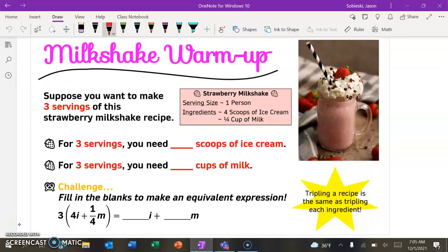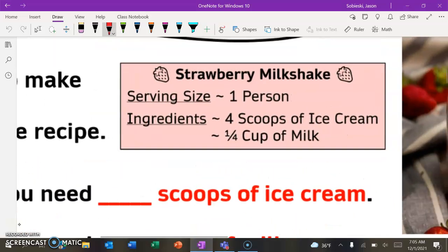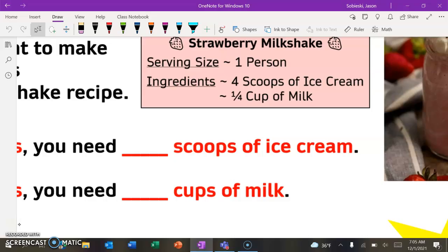So let's say you were making a milkshake, a strawberry milkshake, and here's your recipe. The recipe says the serving size is for one person, and you would need four scoops of ice cream and one-fourth cup of milk. Well, what if you wanted to make enough for you and two friends, so three total people? Well, you would need four scoops of ice cream for you, four scoops for your first friend, and four scoops for your second friend. So that would be 12 total scoops of ice cream. And then same thing with the milk. One-fourth cup for you, one-fourth cup for your first friend, and one-fourth cup for your second friend. So that would mean you would need three-fourths cups of milk.